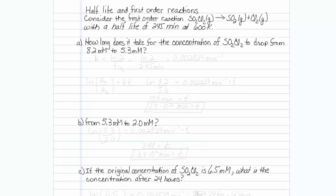This is how to work with half-life and first-order reactions. Consider the first-order reaction, SO2Cl2 going to SO2 and Cl2, with a half-life of 245 minutes at 600 K. How long does it take for the concentration of SO2Cl2 to drop from 8.2 millimolar to 5.3 millimolar?